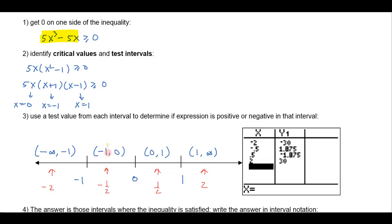If I plug in negative one-half, I end up getting 1.875. That is greater than 0, so this interval is going to be part of the solution. You can do these in your calculator as well. But I want to show you how you can do it even more easily — notice that plugging negative 2 into the original expression is the same as plugging negative 2 into the factored form, because this is just the factorization of that.